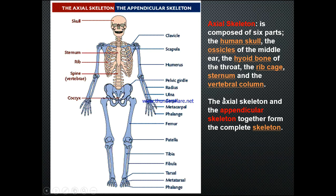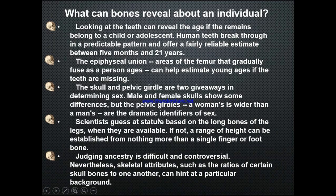The appendicular skeleton — our appendages — together with the axial skeleton forms the complete skeleton. A good way to start understanding anatomy is to think about osteology in relation to the central nervous system, which consists of the brain and spinal cord, and the peripheral nervous system with its various plexuses to the peripheries. The CNS corresponds with the axial skeleton and the PNS with the peripheral skeleton.